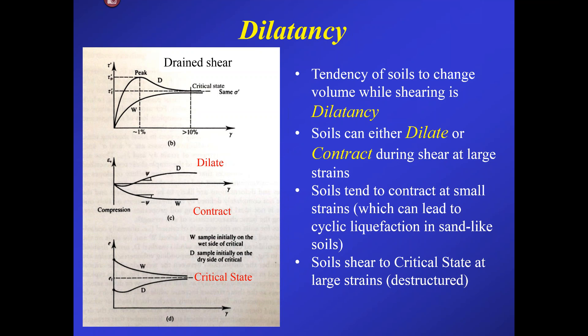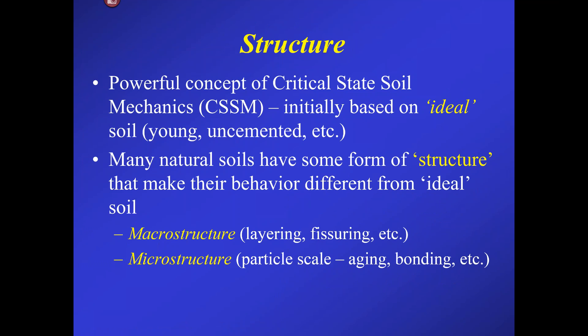Soils shear to critical state at large strains, and by the time it gets to critical state, it's lost any structure it has. The powerful concepts of critical state soil mechanics were initially based on ideal soils — young, uncemented, either clean silica sands or freshly deposited clays in the laboratory. Many natural soils have some form of structure that makes their behavior different from that of ideal. I'll use the term macrostructure to refer to large features of layering and fissuring, but I'll focus on microstructure — at the particle scale, due to things like aging and bonding, cementation at the particle scale.